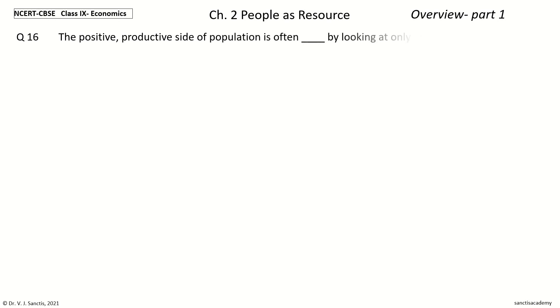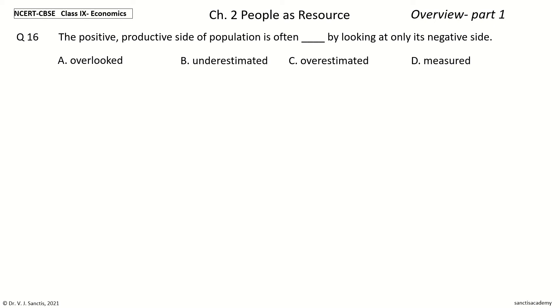Question 16: The Positive Productive Side of Population is often ___ by looking at only its Negative Side. The options are: Overlooked, Underestimated, Overestimated, Measured. Your time to choose. And the answer is: Overlooked. So, the Positive Productive Side of Population is often Overlooked by looking at only its Negative Side.